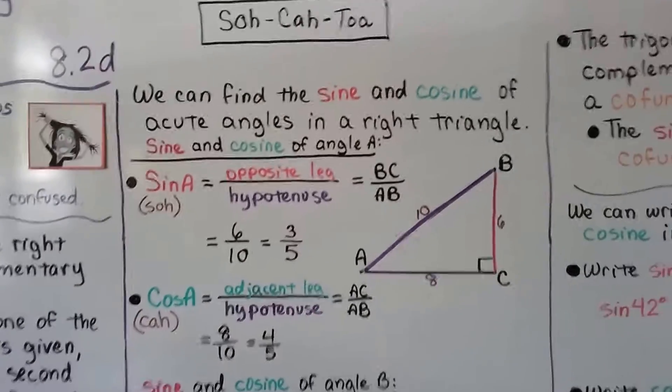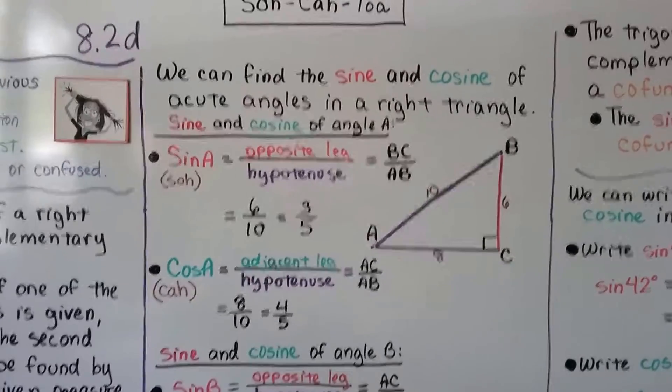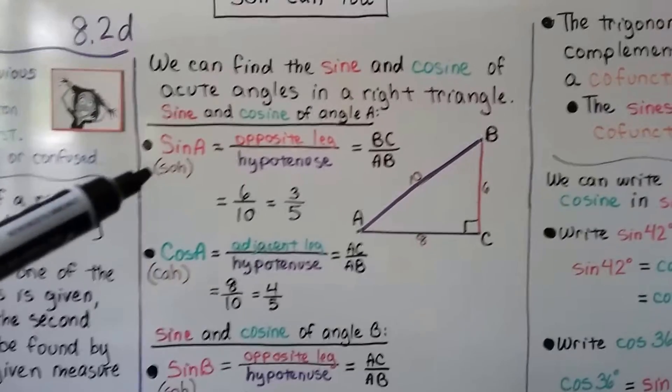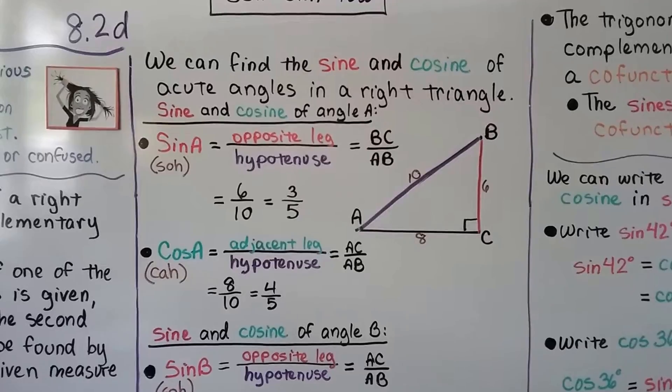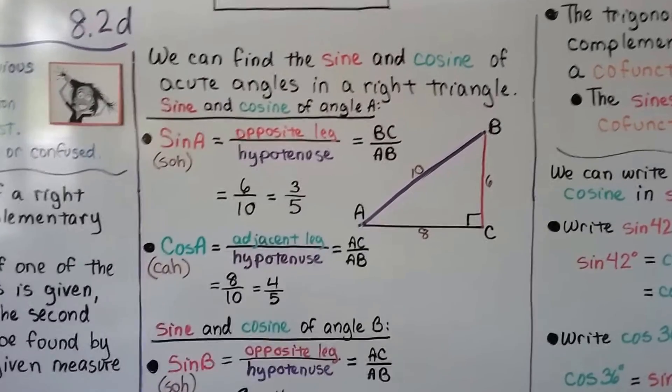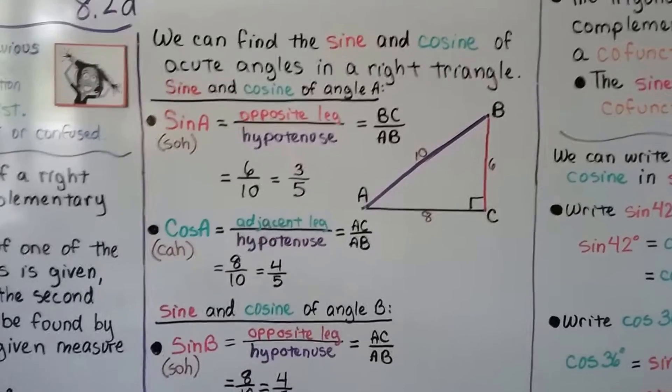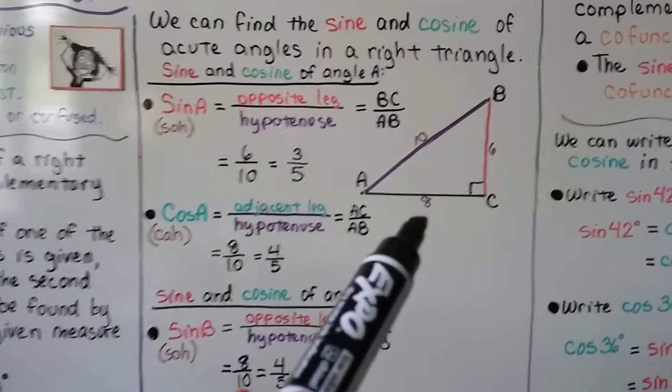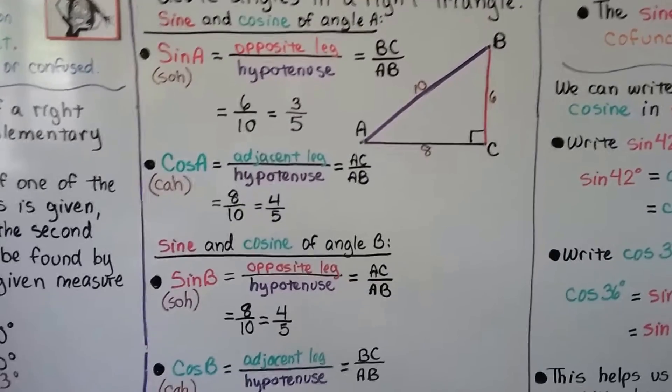We can find the sine and cosine of acute angles in a right triangle. For the sine and cosine of angle A, sine of A is going to be the opposite over the hypotenuse, BC over AB. That would be 6 over 10, which simplifies to 3 fifths. And the cosine of A would be the adjacent leg 8 over the hypotenuse 10, which simplifies to 4 fifths.